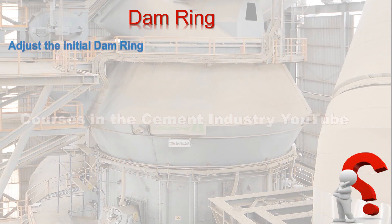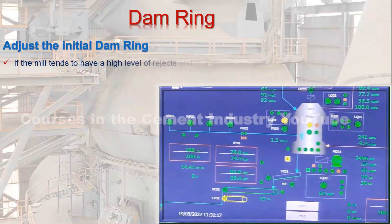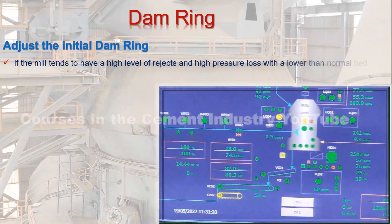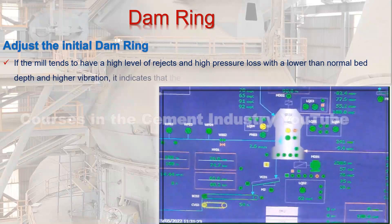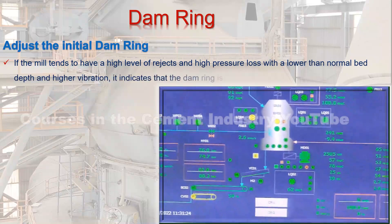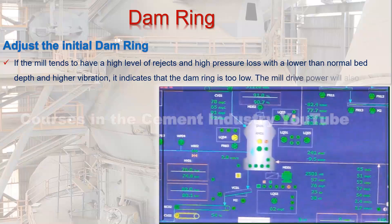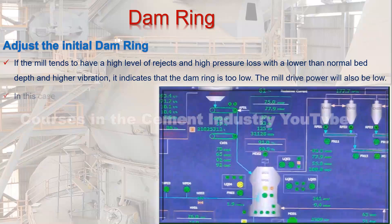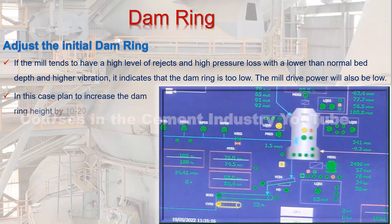Adjust the initial dam ring: if the mill tends to have a high level of rejects and high pressure loss, with a lower than normal bed depth and higher vibration, it indicates that the dam ring is too low. The mill drive power will also be low. In this case, plan to increase the dam ring height by 10 to 20 millimeters.